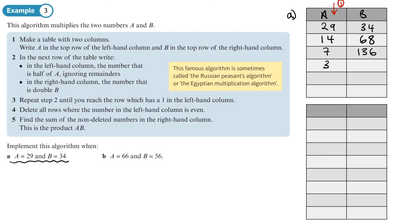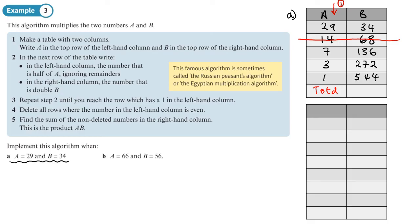Continuing: 3 halves to 1 (ignoring remainder), 272 doubles to 544. We've reached one in the left column. Now step four: delete all rows where the left column is even. Only the row with 14 is even, so we cross that out. Then we find the sum of the remaining right-hand column numbers.